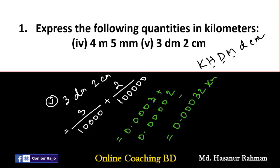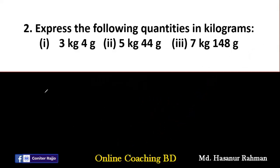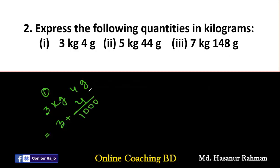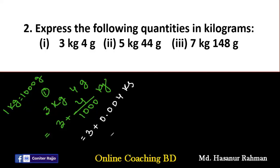Number two of the exercise: express the following quantities in kilograms. Number one — three kilograms, four grams. The kilograms stay as three. Since one kilogram equals one thousand grams, we divide four by one thousand to get 0.004 kg. The final answer is 3.004 kilograms.